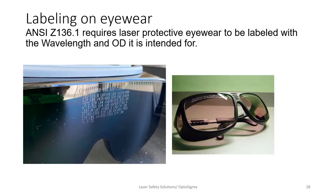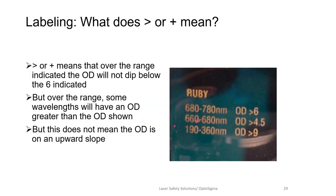Here are two pairs of eyewear with labeling — one has labeling on both lenses, one side with U.S. labeling and the other with European labeling. Regarding the 'greater than' or 'plus' symbol: if eyewear is labeled '680 to 780 nanometers, OD greater than 6,' it means between 680 and 780 nanometers the optical density will never drop below OD 6. For some wavelengths it may be considerably higher, but it will never fall below 6. That is what 'greater than' means — it tells you the minimum level of eye protection.